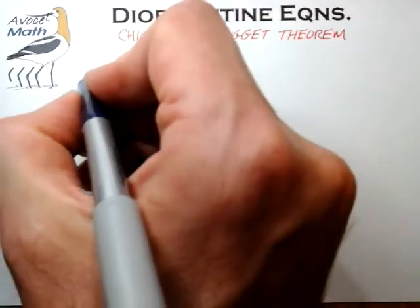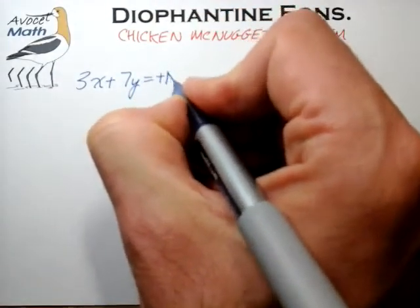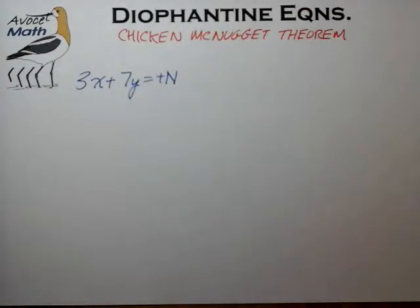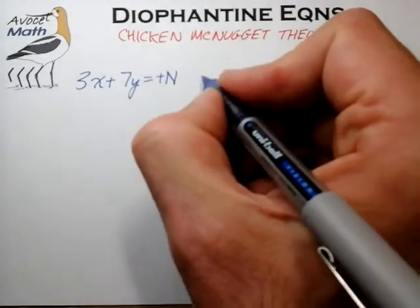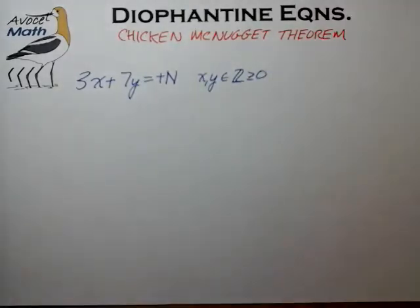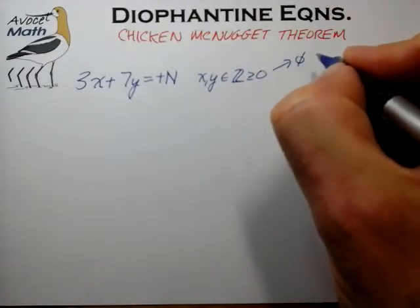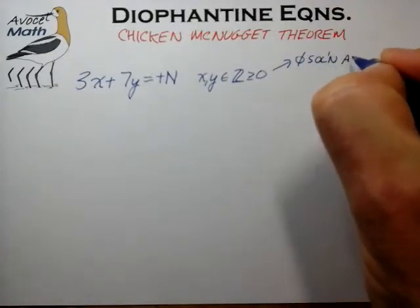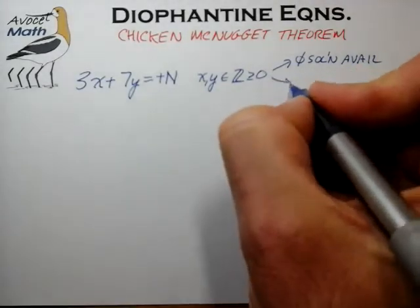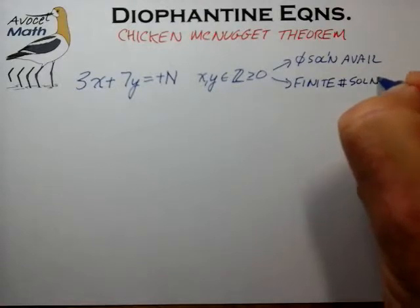Let's remind ourselves of the prototype example equation we're dealing with in this video series: 3x plus 7y equals some positive integer n. For this solution concept, we're interested in solving this Diophantine equation for x and y that are elements of non-negative integers. When we constrain the problem to non-negative solutions, we're left with two possible outcome scenarios: one where no solutions are available, and one where we have a finite number of solutions.